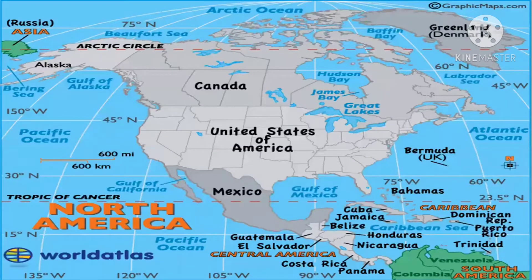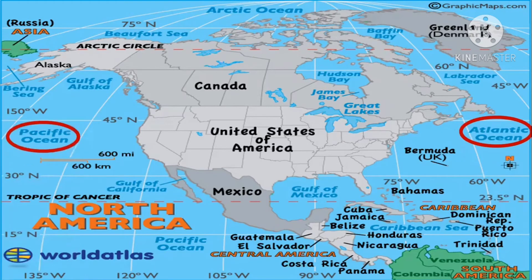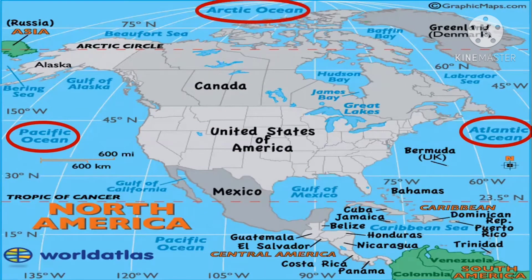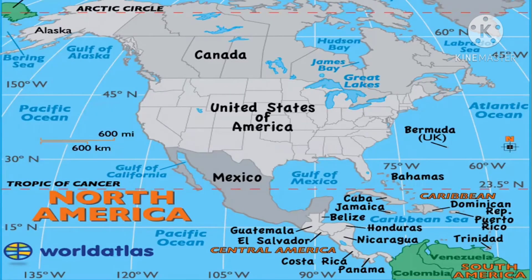Now let's learn about the physical setting. In physical setting we will learn about the oceans and the main rivers present in North America. North America is surrounded by the Atlantic Ocean in the east, the Pacific Ocean in the west, and the Arctic Ocean in the north. It is separated from Asia by the Bering Strait and has a land link with South America by the Isthmus of Panama.